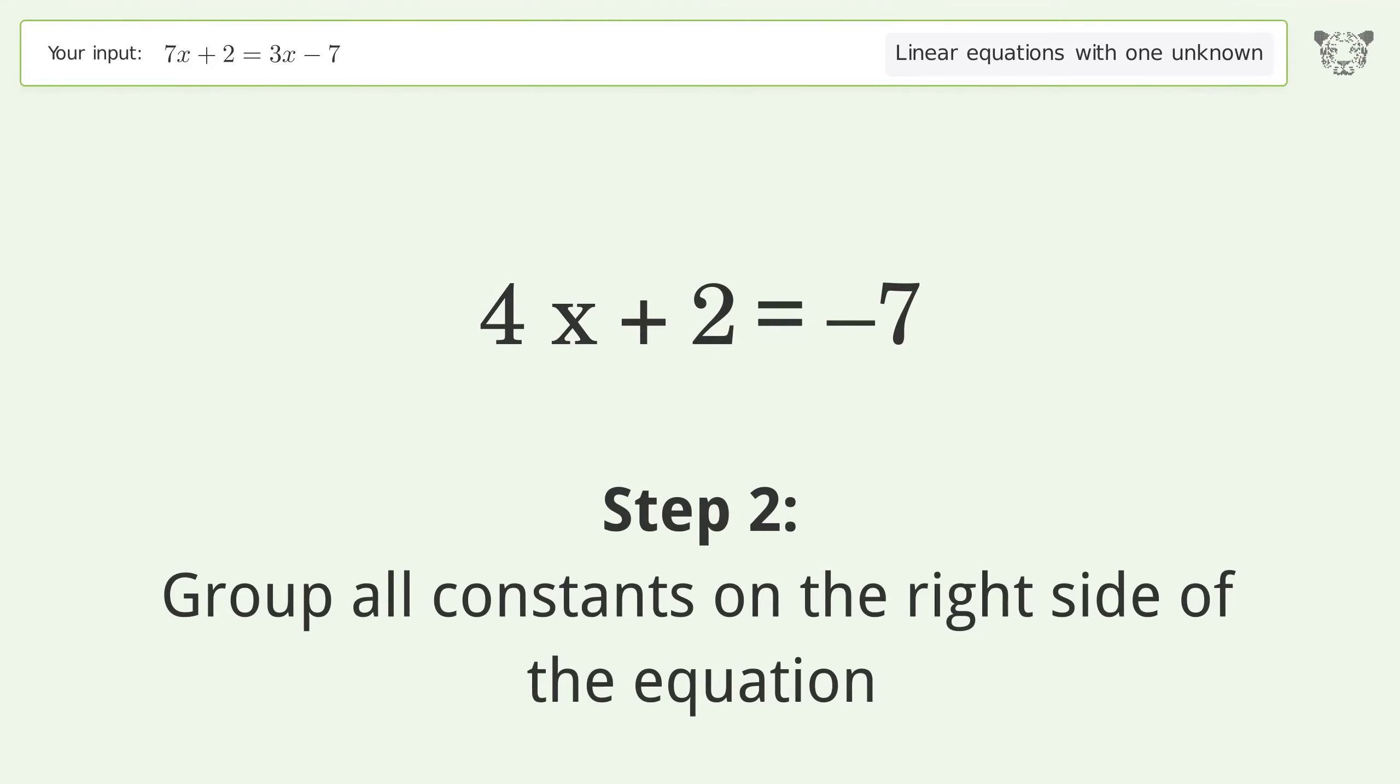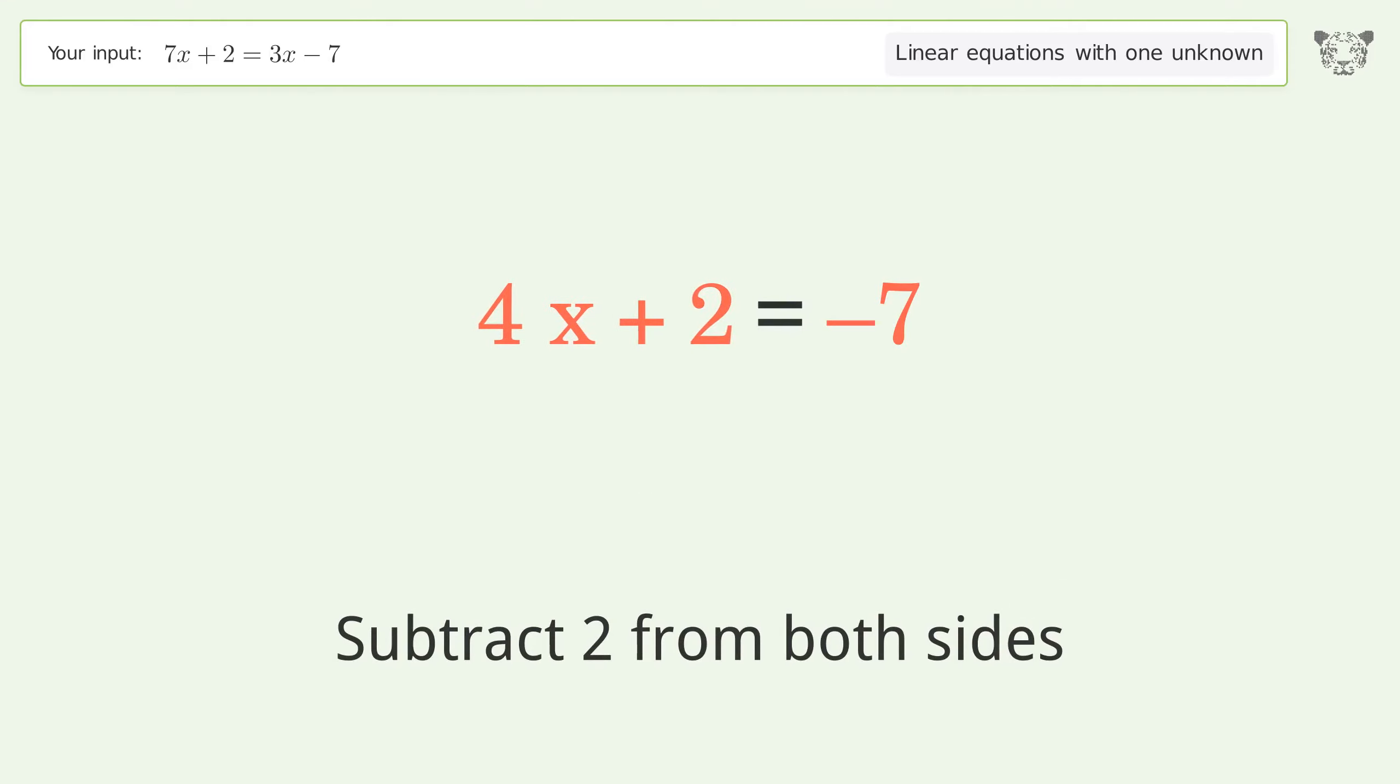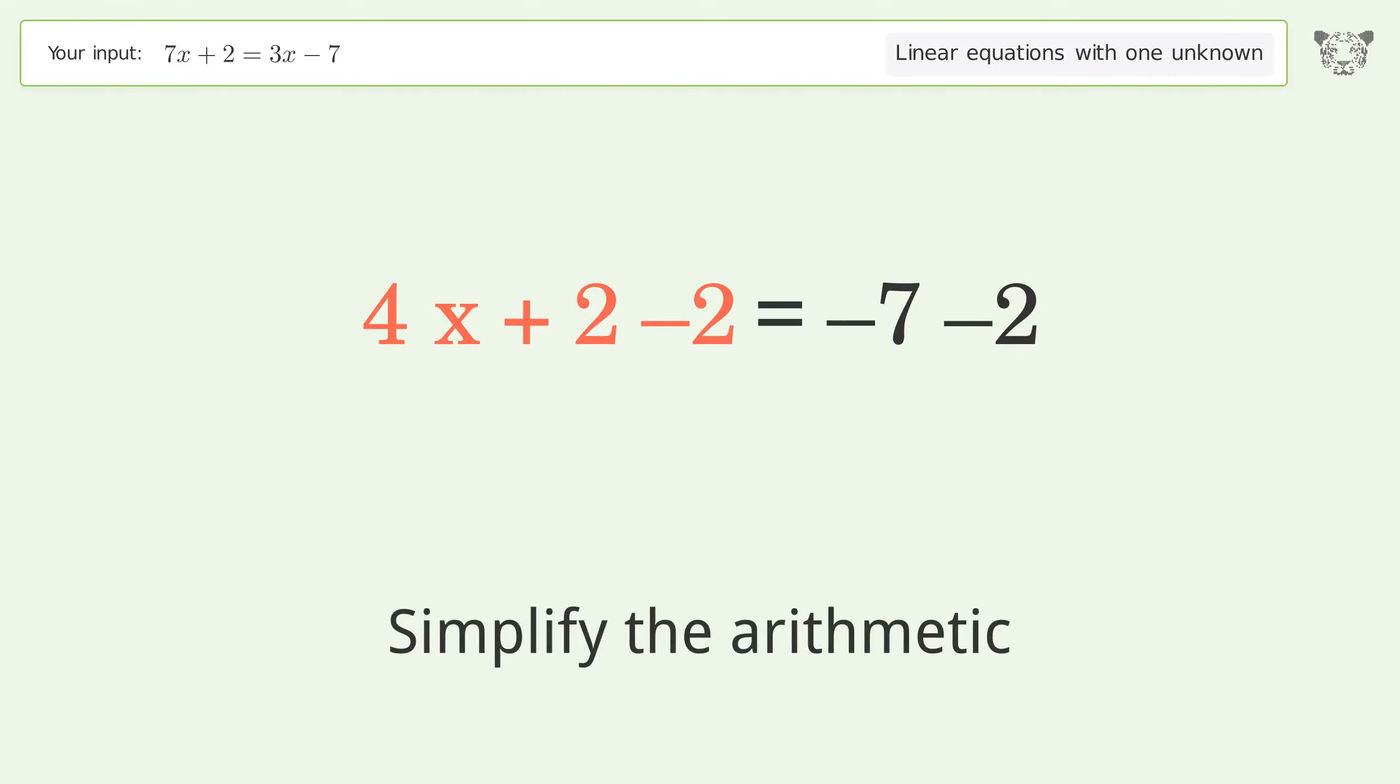Group all constants on the right side of the equation. Subtract 2 from both sides. Simplify the arithmetic.